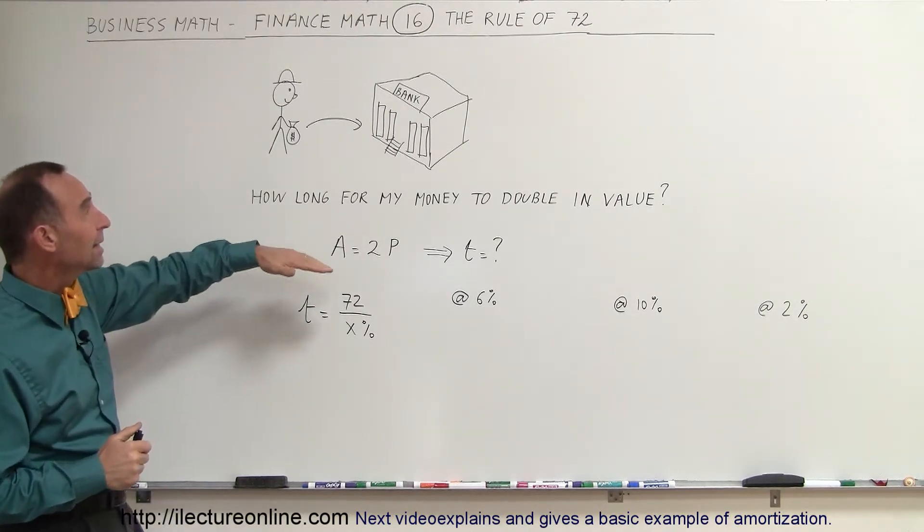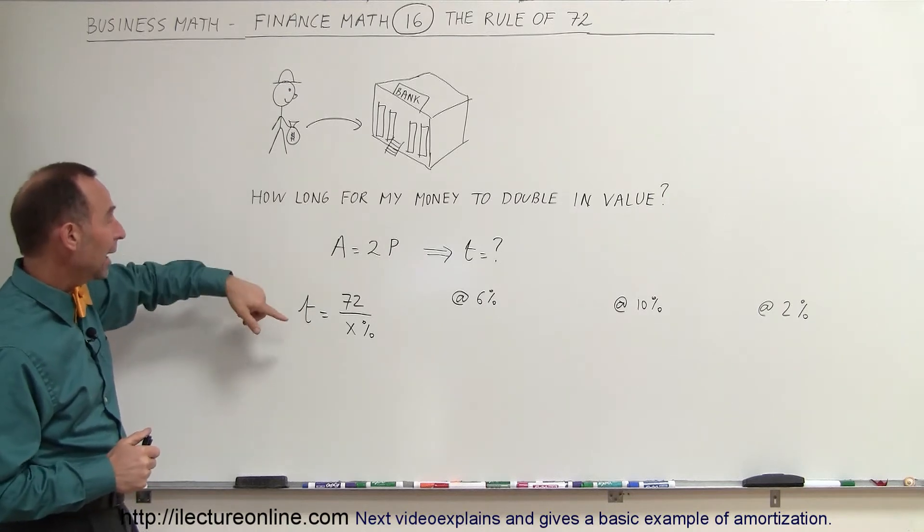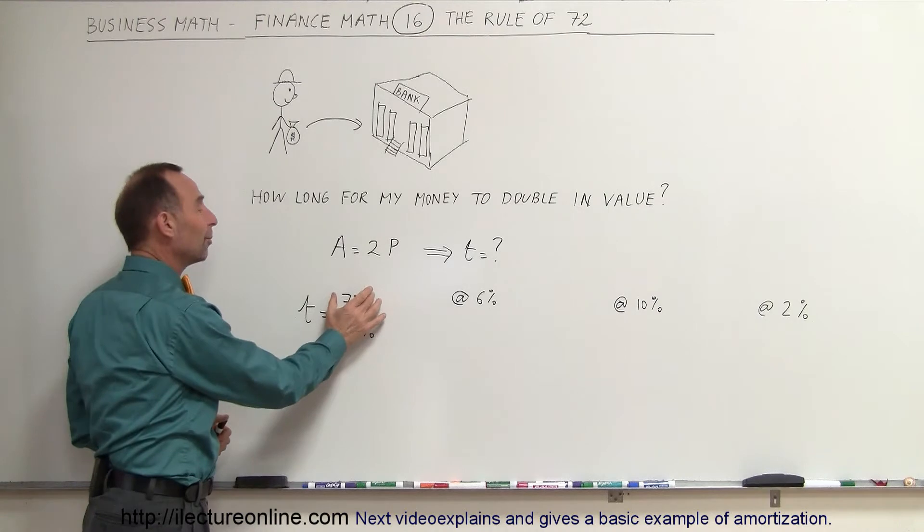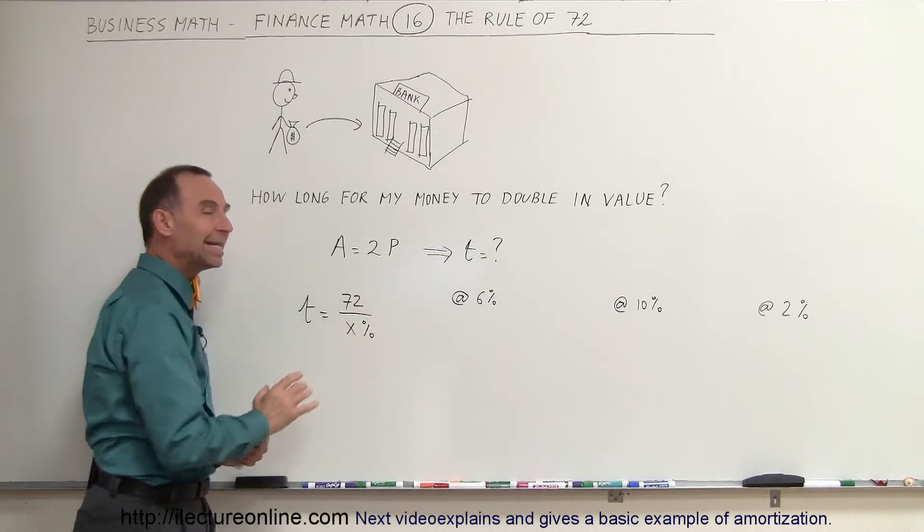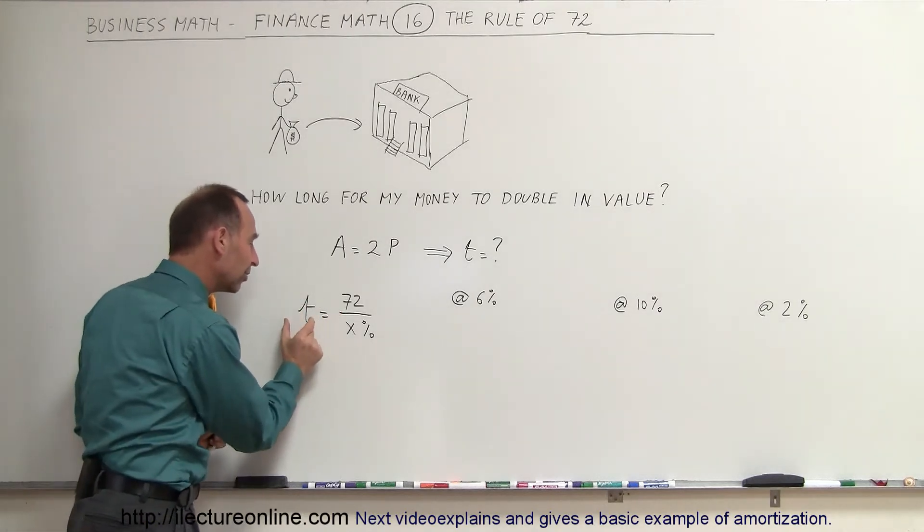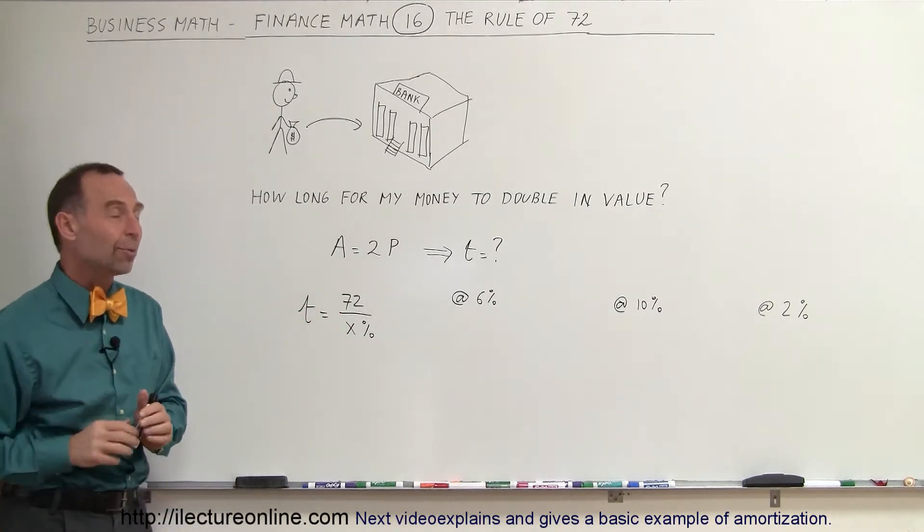What you do is you take the number 72 and divide it by the interest rate, the rate in percentage, and that fraction will equal the time in years that it will take to double your money.